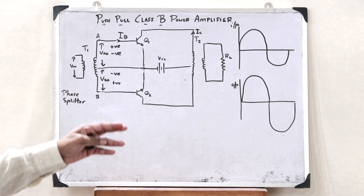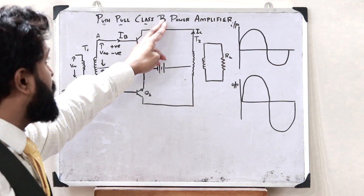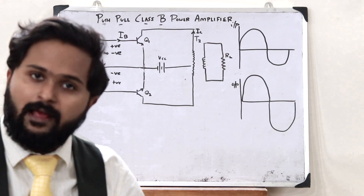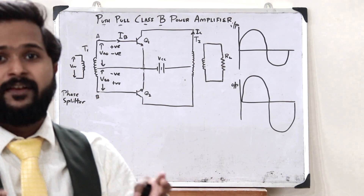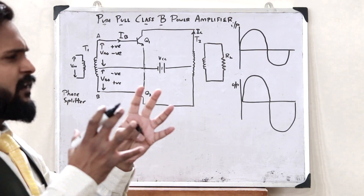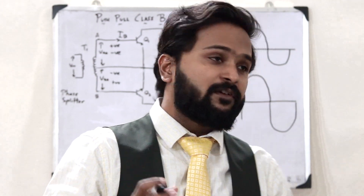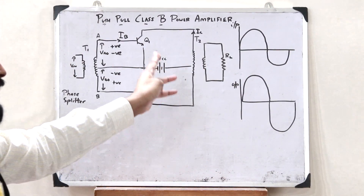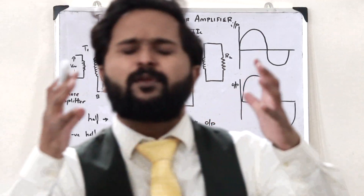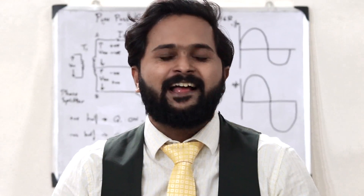We need a push-pull class B power amplifier because a class B power amplifier is around 78.5% more efficient than other amplifiers. Therefore, using a push-pull class B power amplifier gives a much more efficient way of amplifying an input signal — that is why we use it.